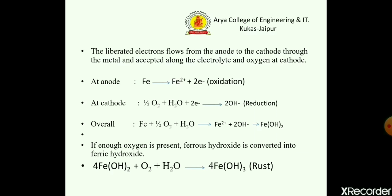The liberated electrons flow from the anode to the cathode through the metal, accepting the electrolyte and oxygen. At the anode, oxidation takes place: Fe → Fe²⁺ + 2e⁻. At the cathode, reduction takes place in the presence of a neutral medium. The reaction is: Fe + ½O2 + H2O → Fe²⁺ + 2OH⁻, forming ferrous hydroxide. If enough oxygen is present, ferrous hydroxide is converted into ferric hydroxide.